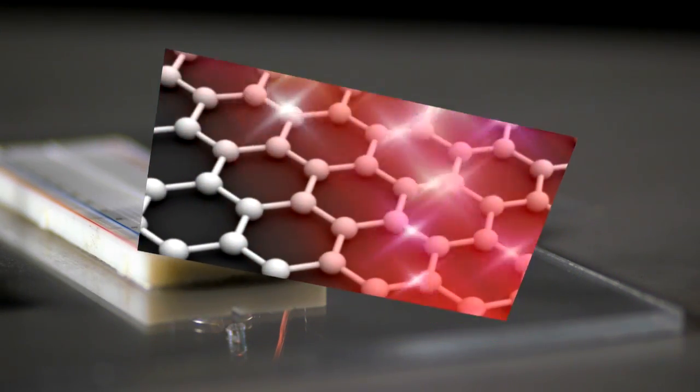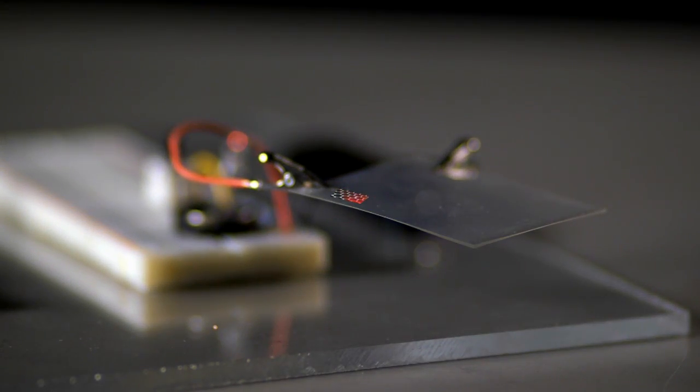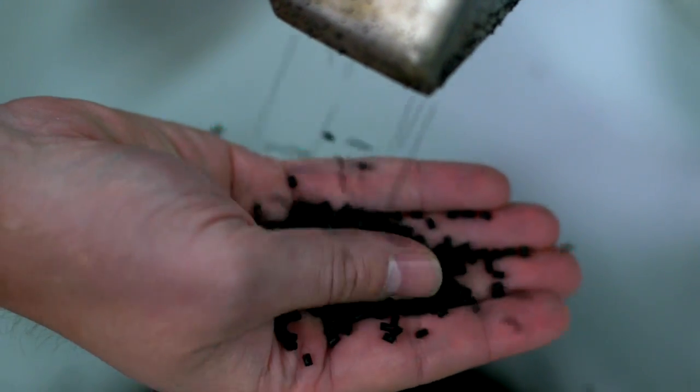Graphene was a lab-scale curiosity produced only in very small quantities. But thanks to innovators like Dr. Bor Jang, it's available and affordable. And Angstrom is producing more than anyone else in the world.